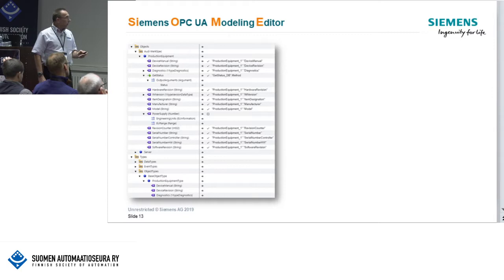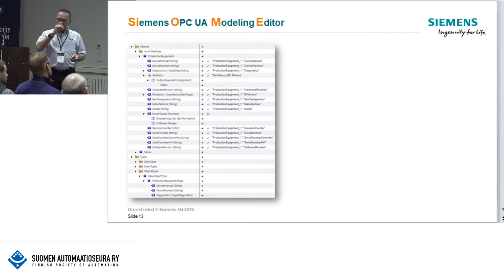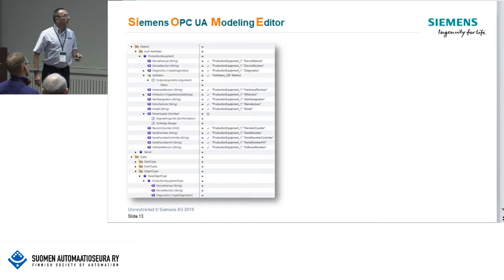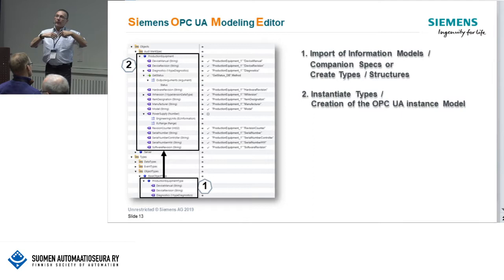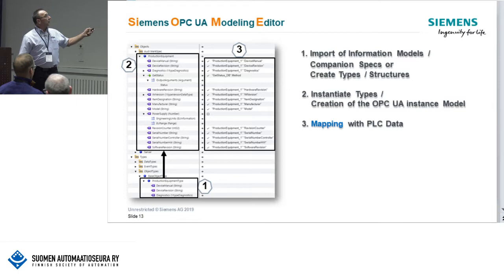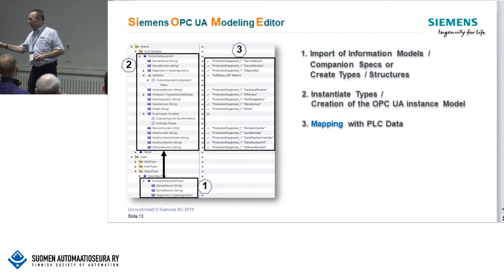In a nutshell: the first step is import of information models and companion specifications. The second step is to instantiate types — you create from the type the real instance, or several instances of that type. After that you create the mapping of those instances. Then you download it, transferring it directly to the PLC.